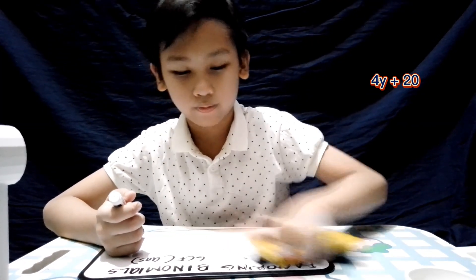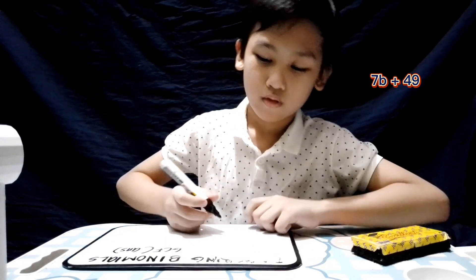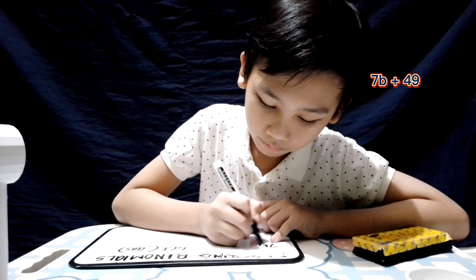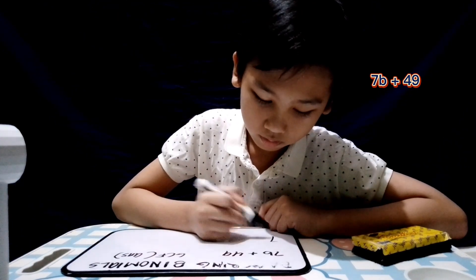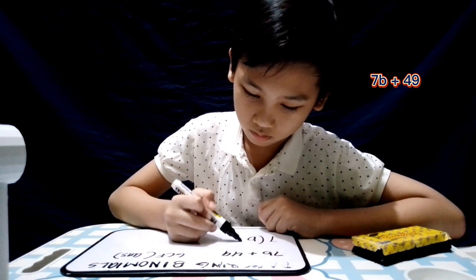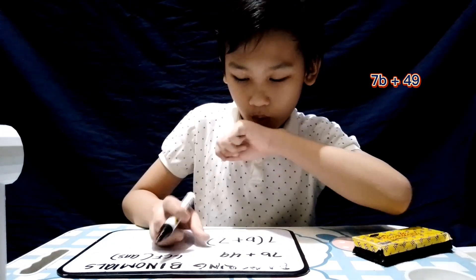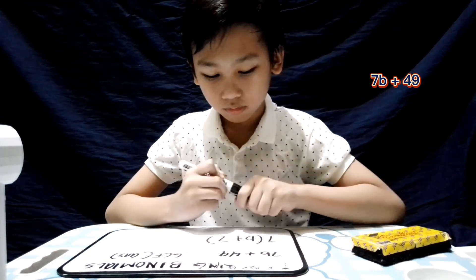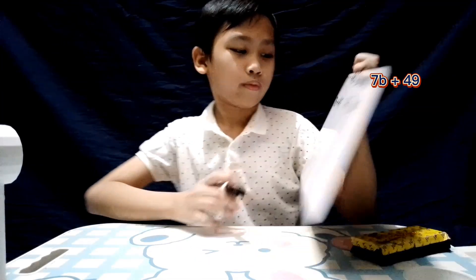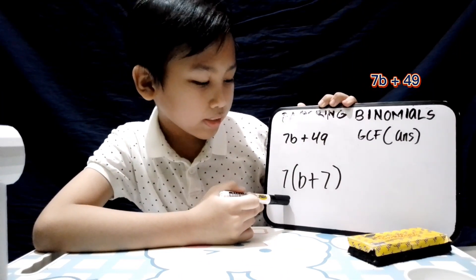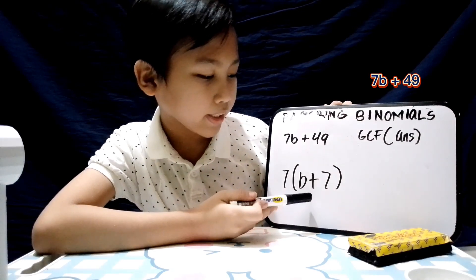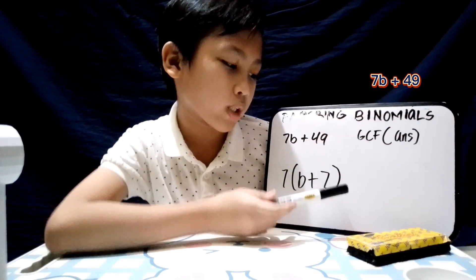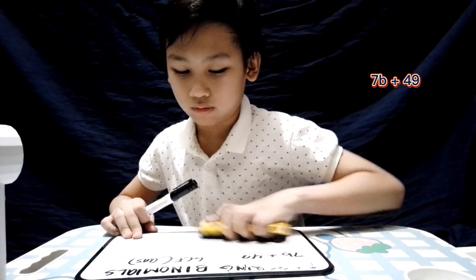Next: 7b plus 49. The answer is 7 times open parenthesis b plus 7, close parenthesis. Okay. Good job.